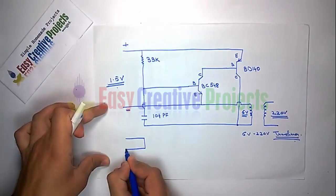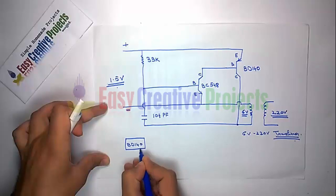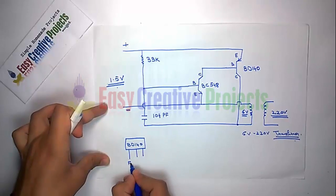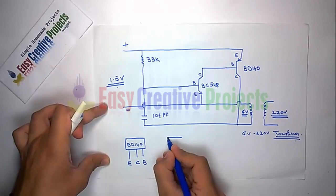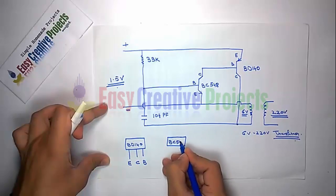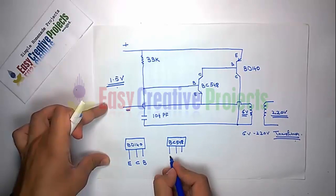BT140 first pin emitter, second pin collector, and third pin base. BC548 first pin collector, second pin base, and third pin emitter.